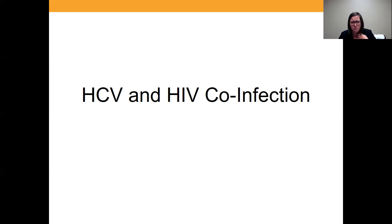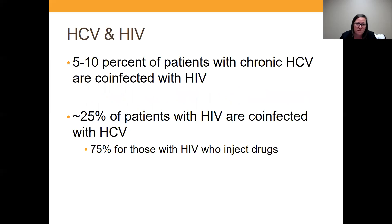I want to move on and talk about hepatitis C and HIV co-infection. About 5 to 10 percent of patients who have chronic hepatitis C are also co-infected with HIV. On the flip side, about 25 percent of patients with HIV are co-infected with hepatitis C. And an estimated 75 percent of patients who have HIV and inject drugs are also co-infected with hepatitis C — quite a lot of overlap between these two viral infections.